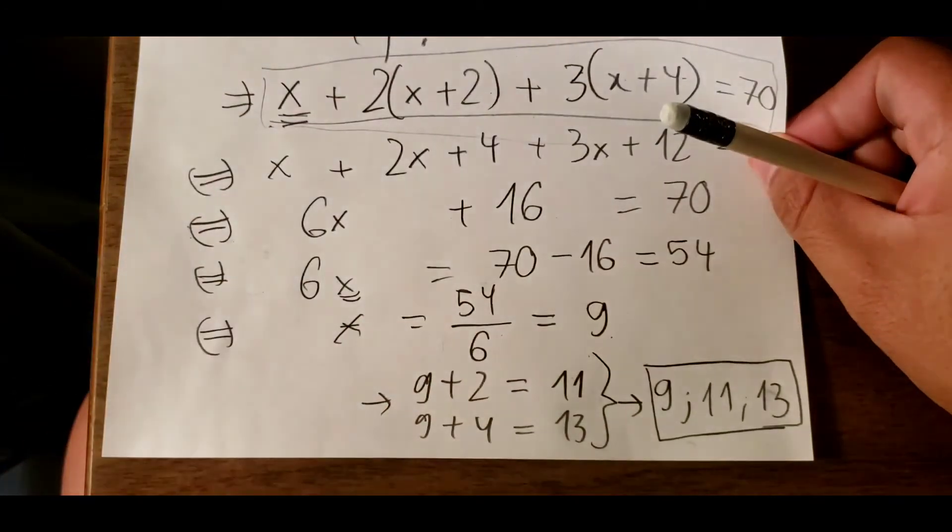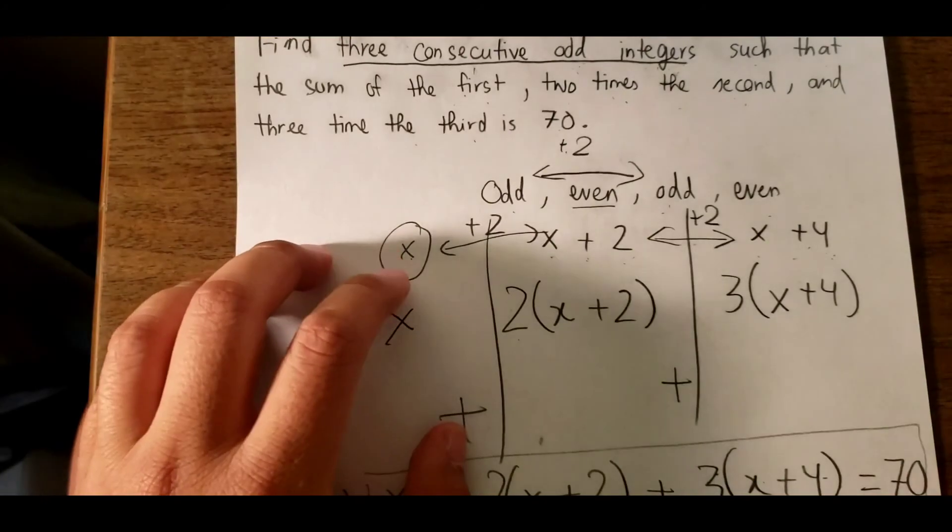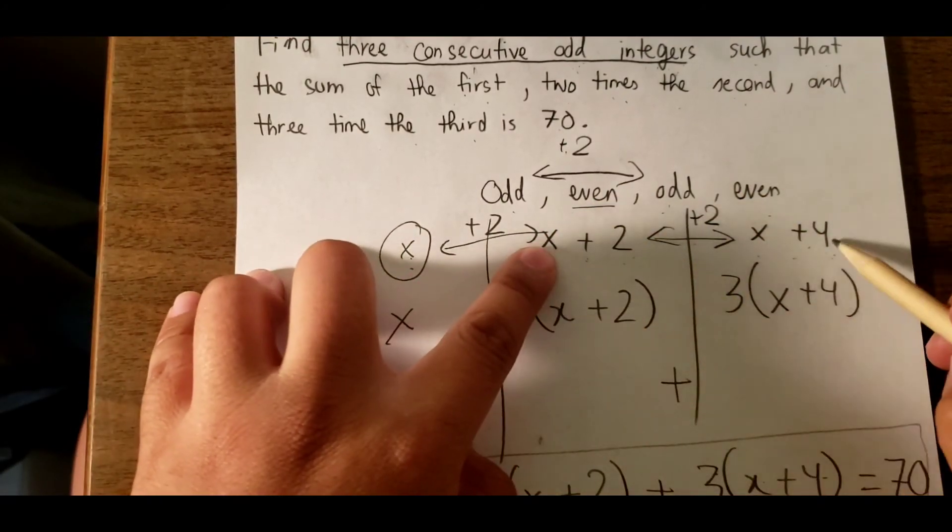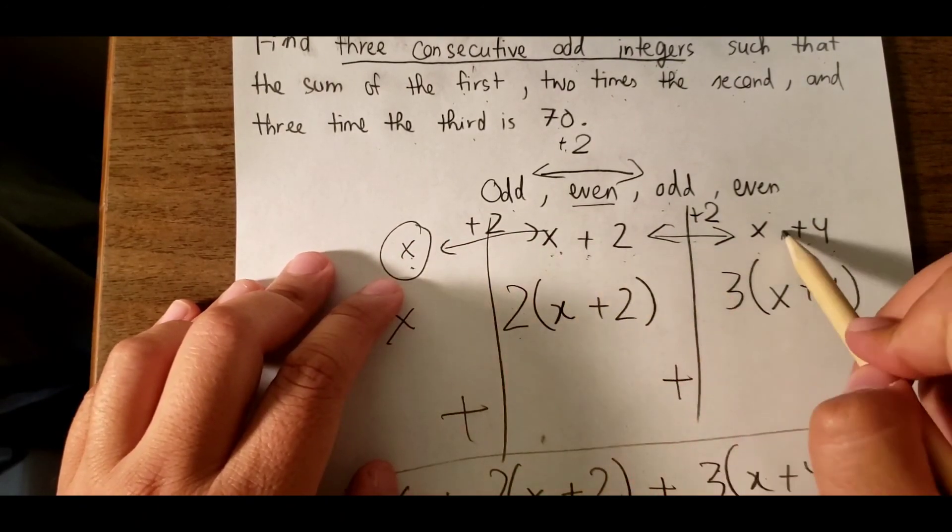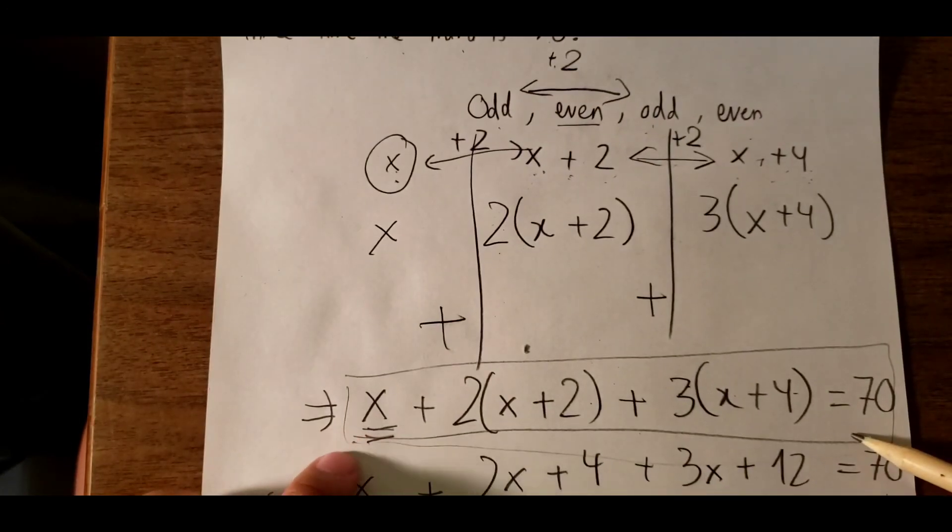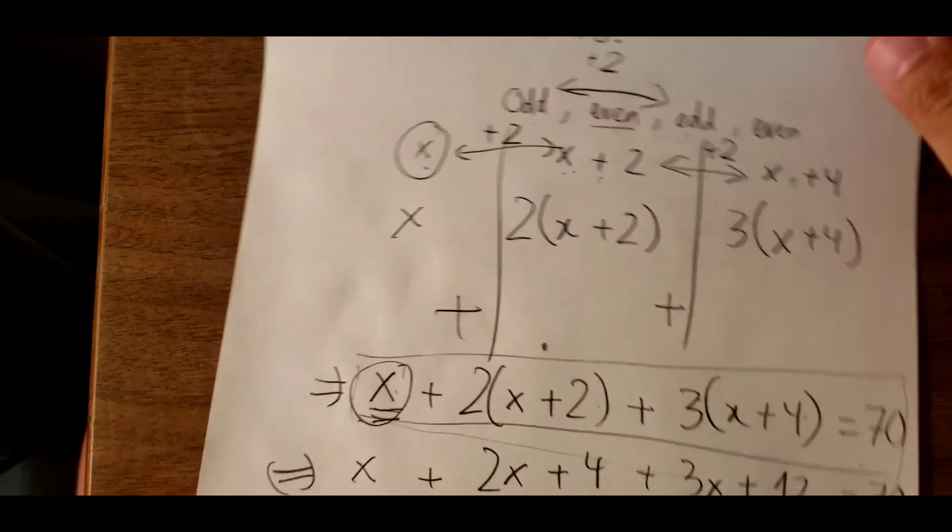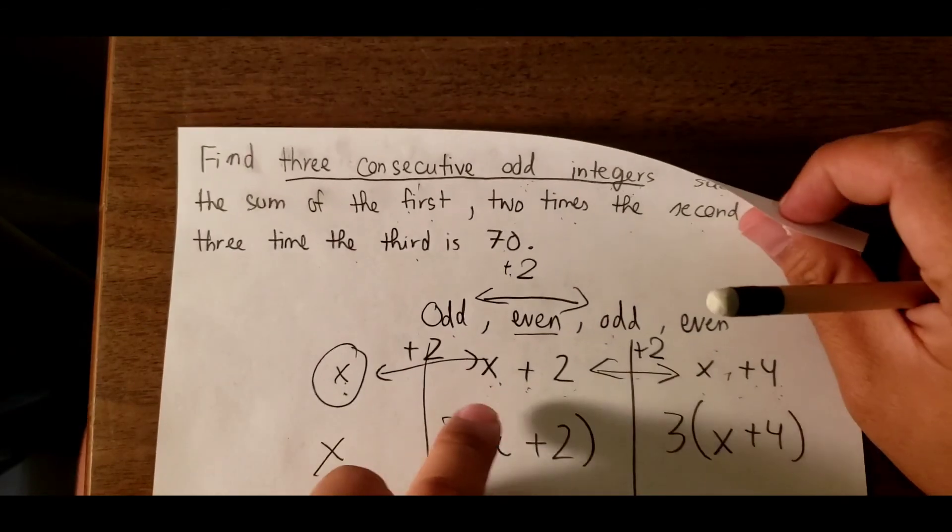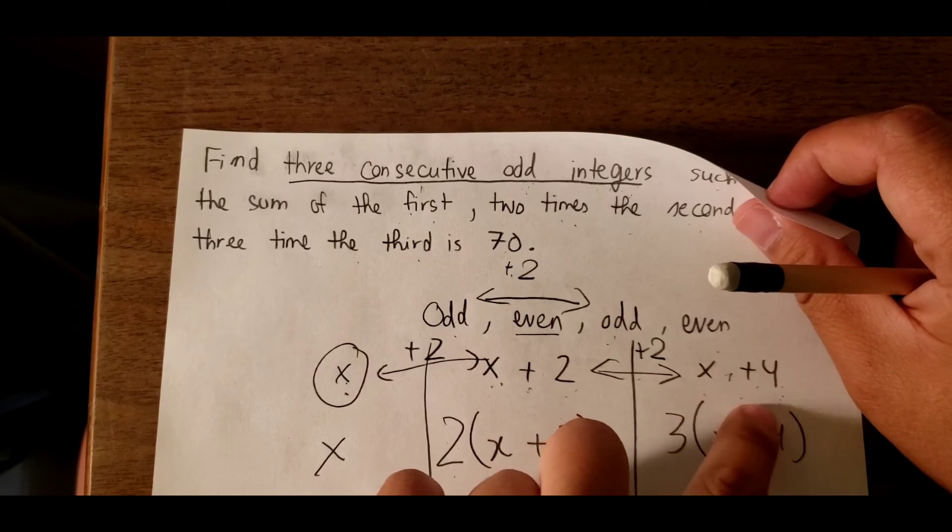So that is the basic thing we can do to make an equation. Just put x as one number so that you can find all the numbers. After we have the information of three numbers, we put them in the equation to calculate the first number. Later, we will find x, and then we will find the solution of the next two numbers, x plus 2 and x plus 4.